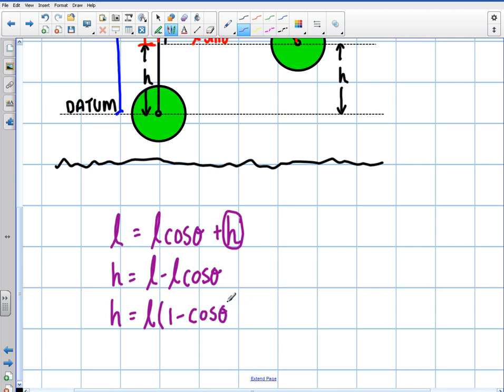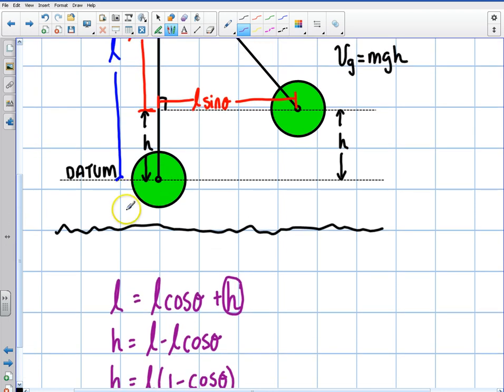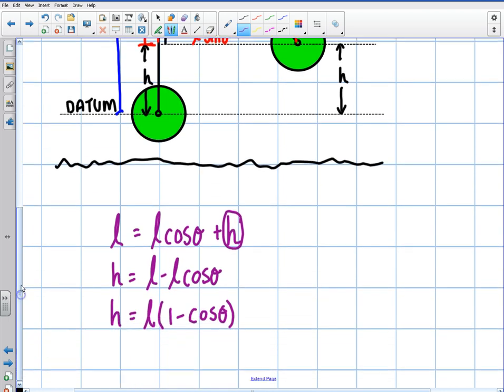So that will work on any simple pendulum that has a massless rod and the center of mass is concentrated here at the center. That will always give you the height that the pendulum swings and it's a very reliable formula.